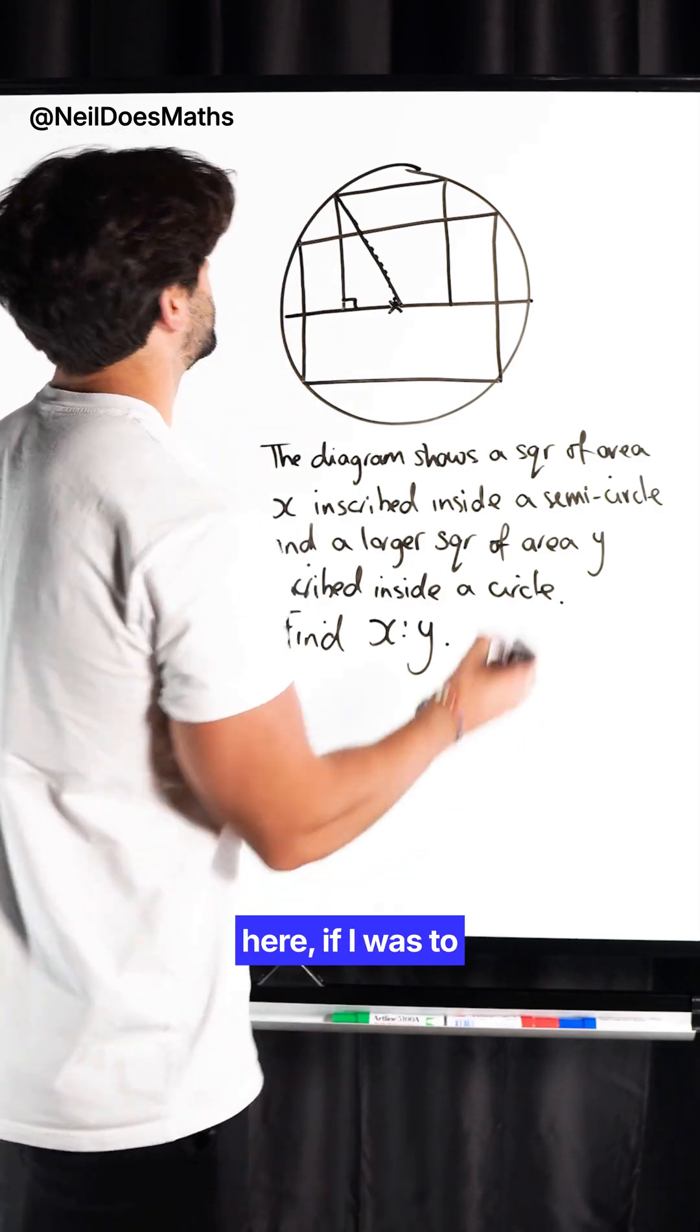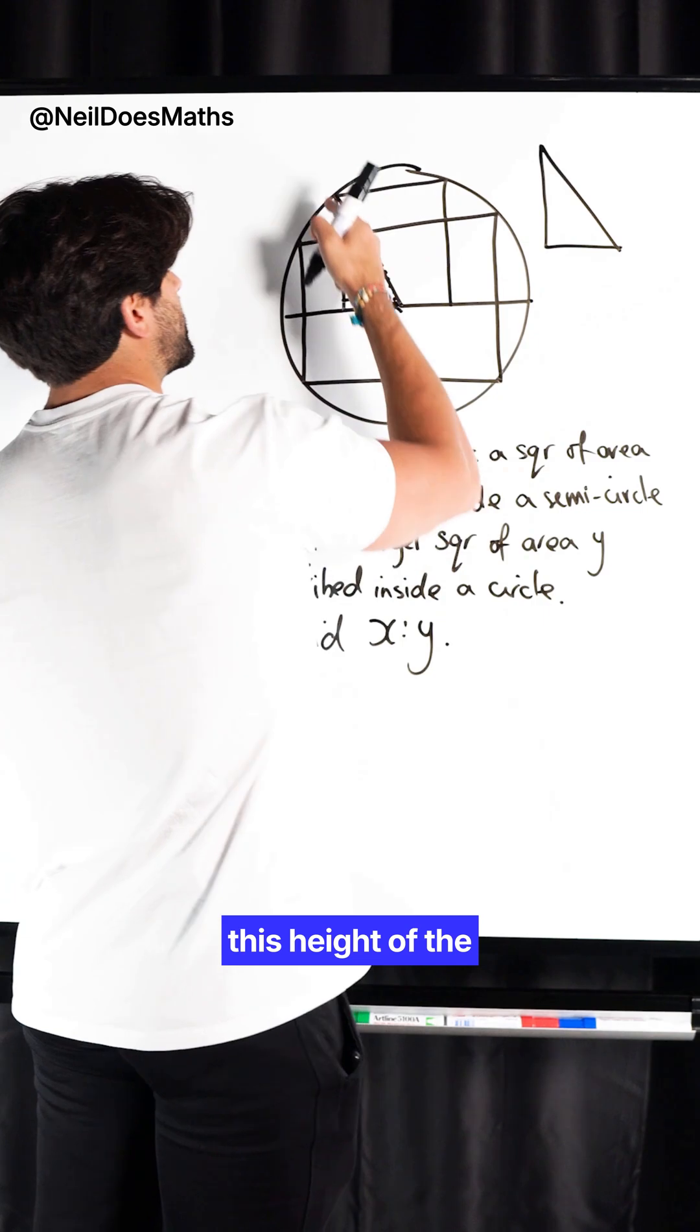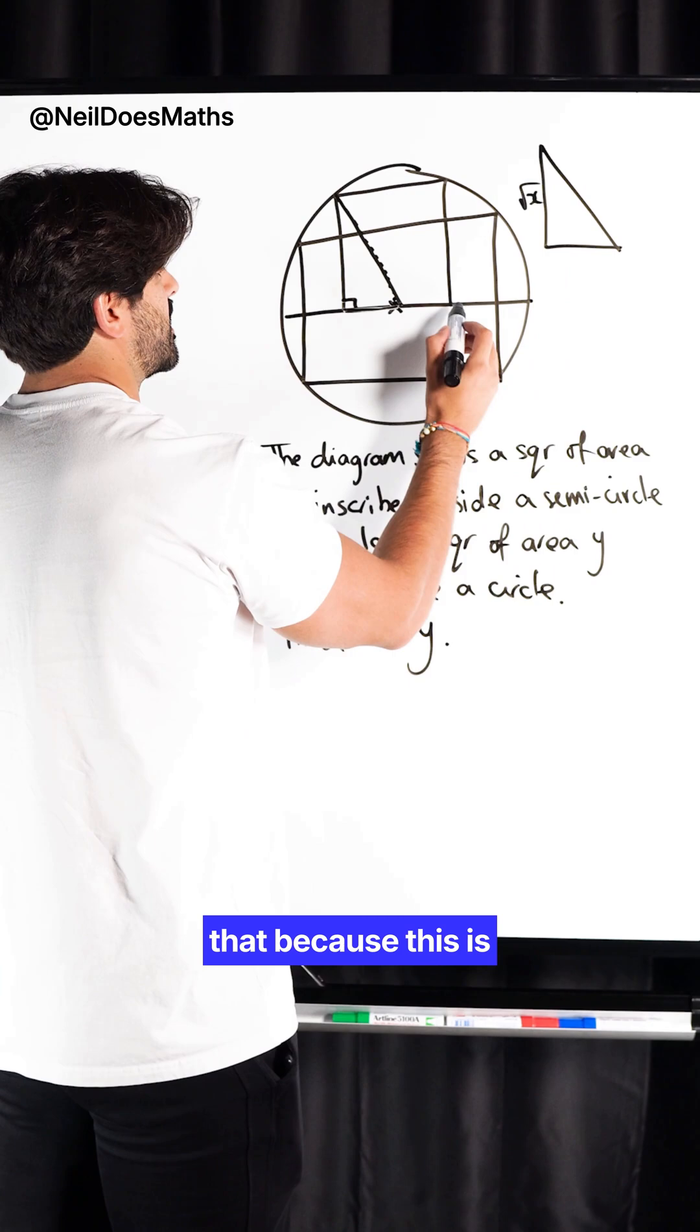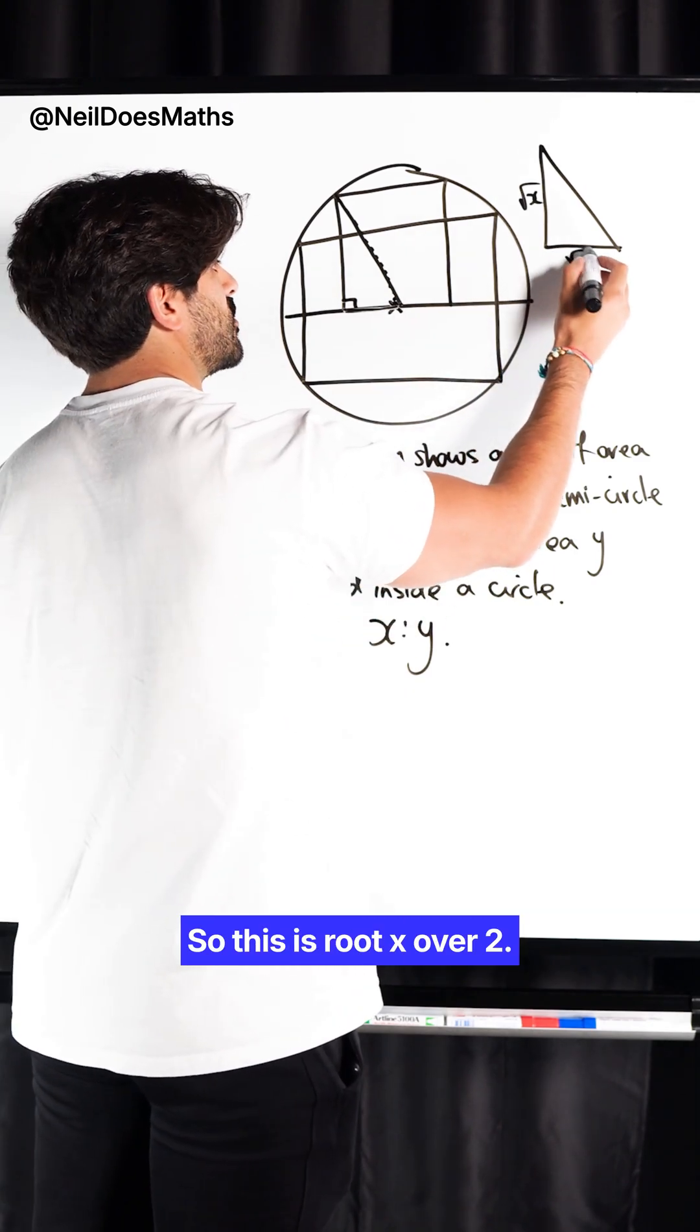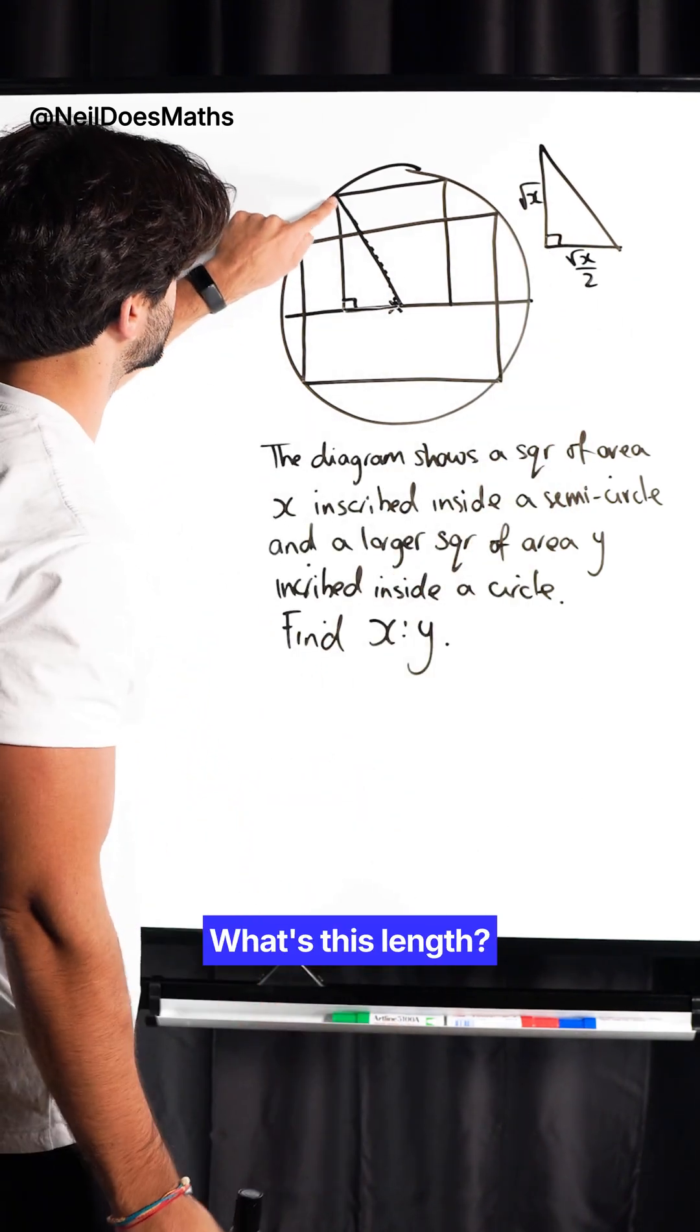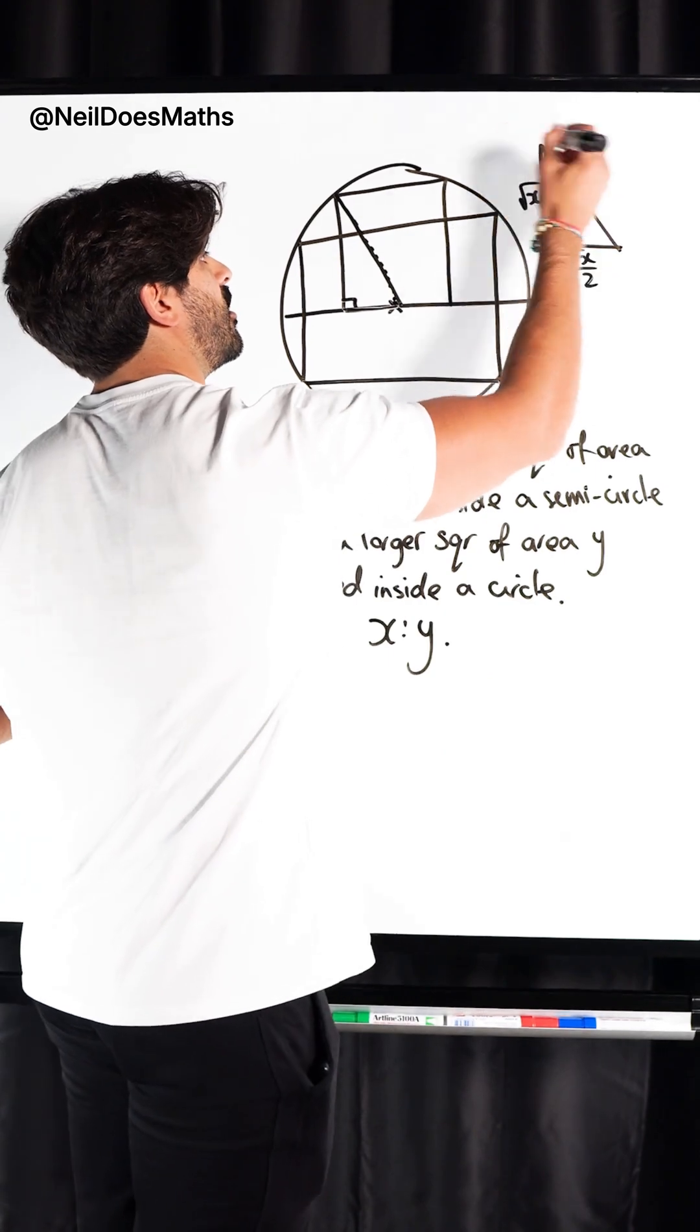So, this triangle here, if I was to redraw it over here, this height of the square is root X, and this would be half of that, because this is root X, so this is root X over 2. And there's my right-angled triangle. What's this length? Well, it's going from the center to the circumference, so that is R.